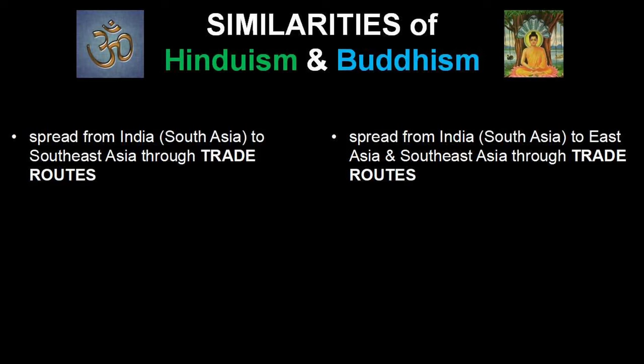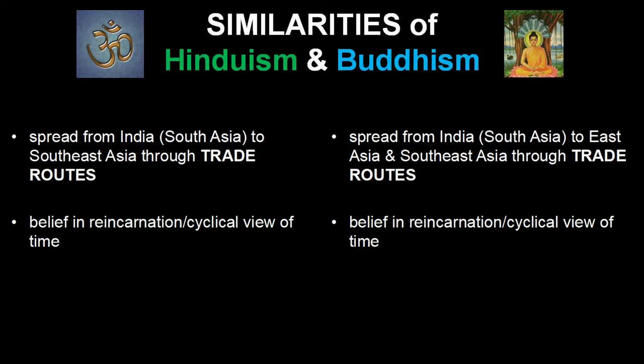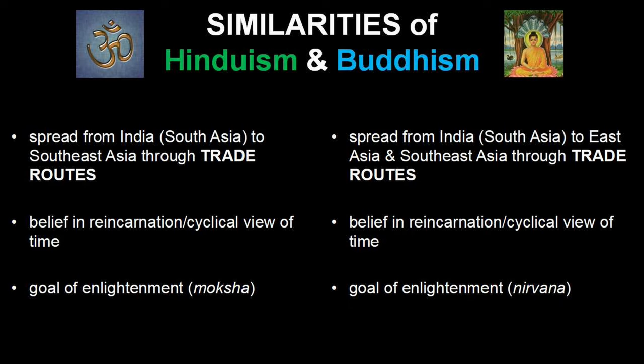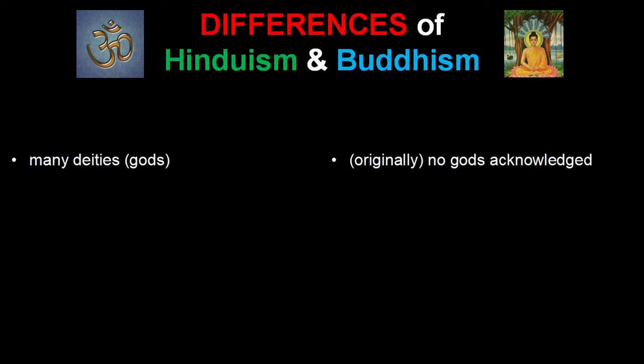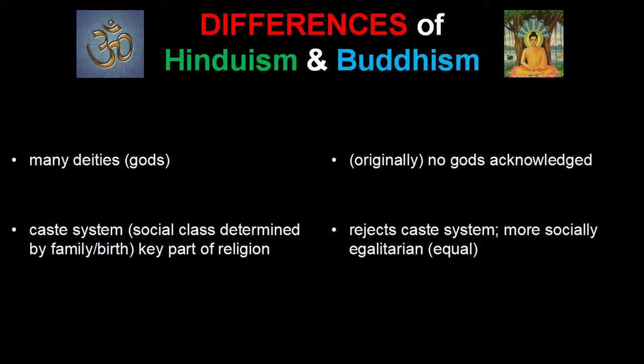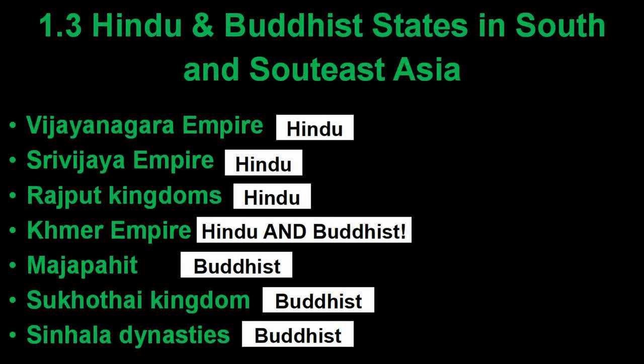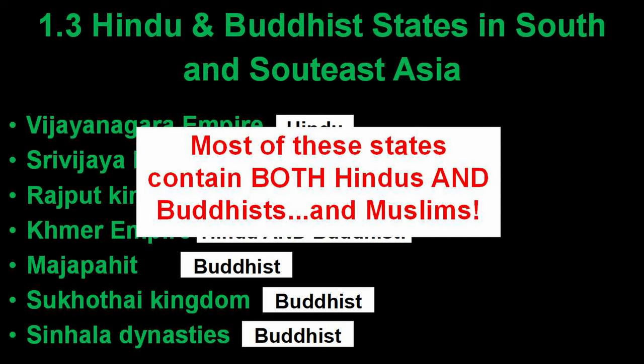Since we're in South and Southeast Asia, let's also talk about Hinduism. Like Buddhism, it came from India and then spread throughout South and Southeast Asia on the Indian Ocean trade routes. Similarities between Hinduism and Buddhism include: both believe in reincarnation and a cyclical view of time, both have some form of enlightenment in which souls can escape from this cycle, and both have the concepts of Dharma and Karma. Major differences: Hinduism has many deities, where Buddhism at least at first does not acknowledge any gods. Also, a key part of Hinduism is the caste system, while Buddhism rejects this and is more socially egalitarian. In each of these states, you would likely find both Hindus and Buddhists, and as time goes on, more and more Muslims.